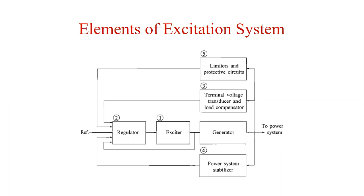The third part of the control circuit is the terminal voltage transducer and load compensator. It senses the generator terminal voltage, rectifies and filters it to a DC quantity, and compares it with a reference which represents the desired terminal voltage. In addition, load compensation may be provided if it is desired to hold constant voltage at some point electrically remote from the generator terminal, for example, partway through the step-up transformer.